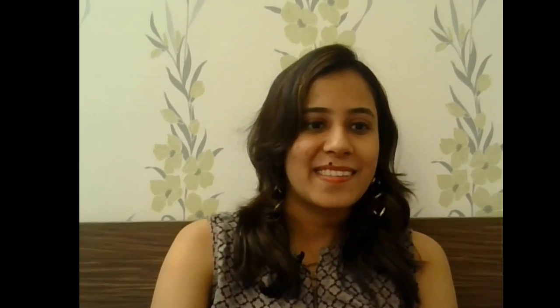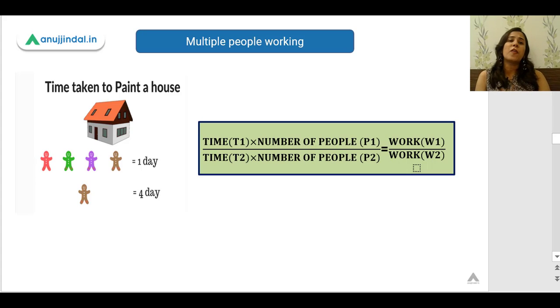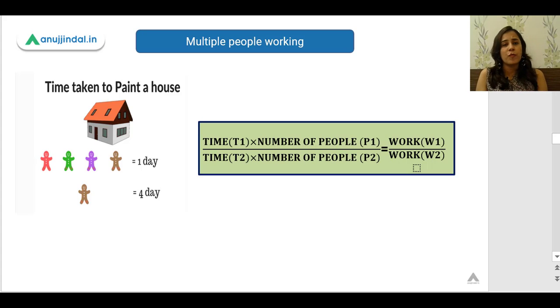Today we are going to see a concept related to time and work where there are multiple laborers working together. In these kinds of questions — category one — you will be told that there are five men and seven women working together and they can do a particular work in X amount of days, or four-fifths or three-fifths of the work in X days, and you have to calculate the value of X.